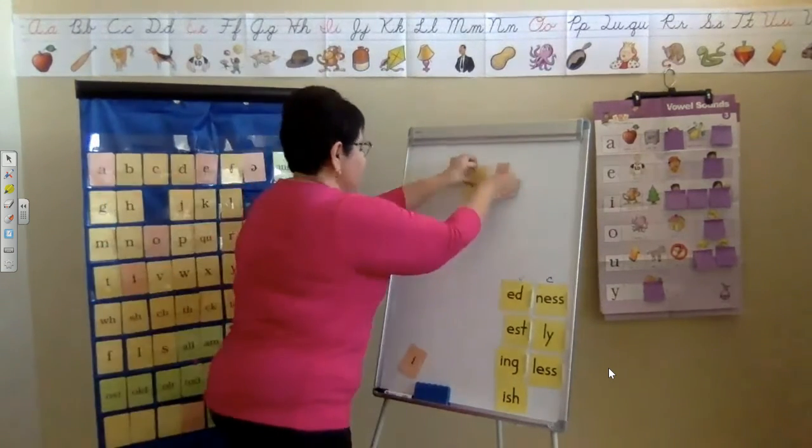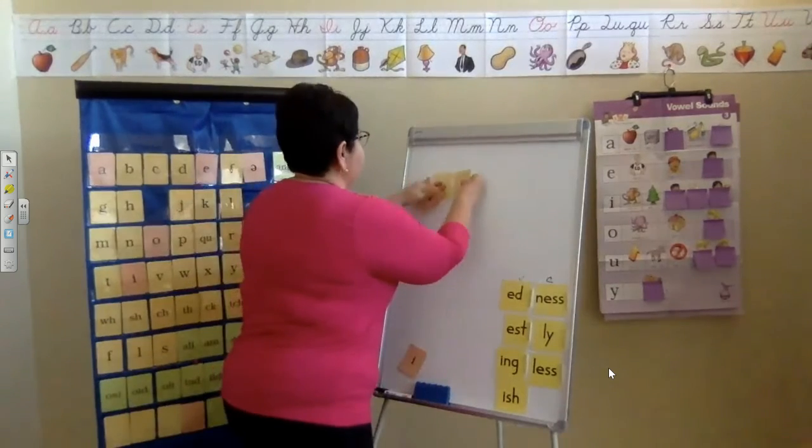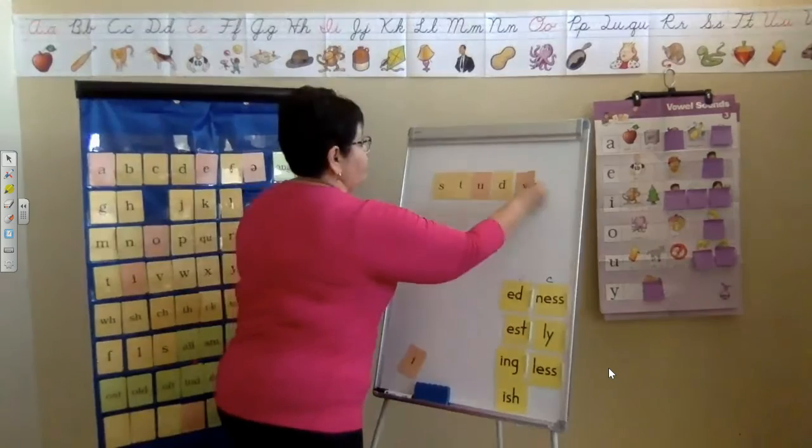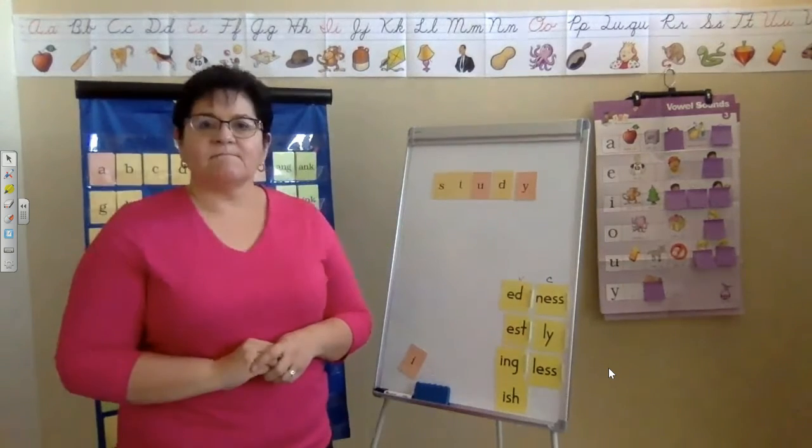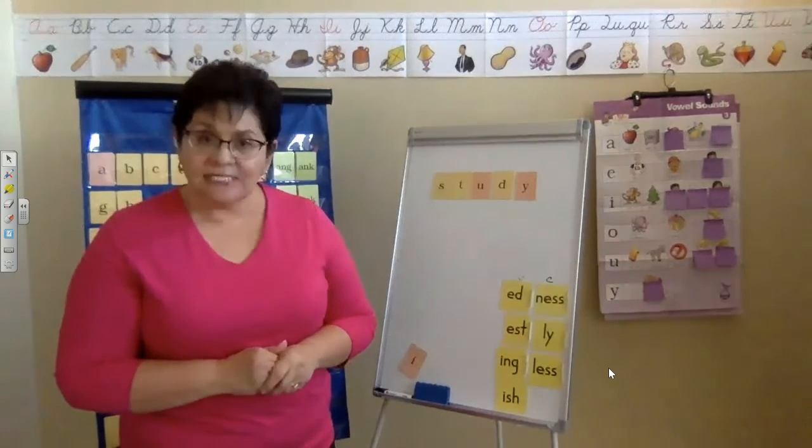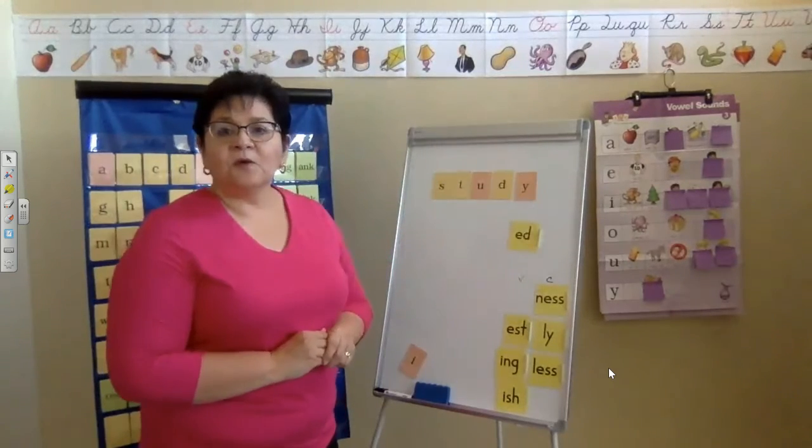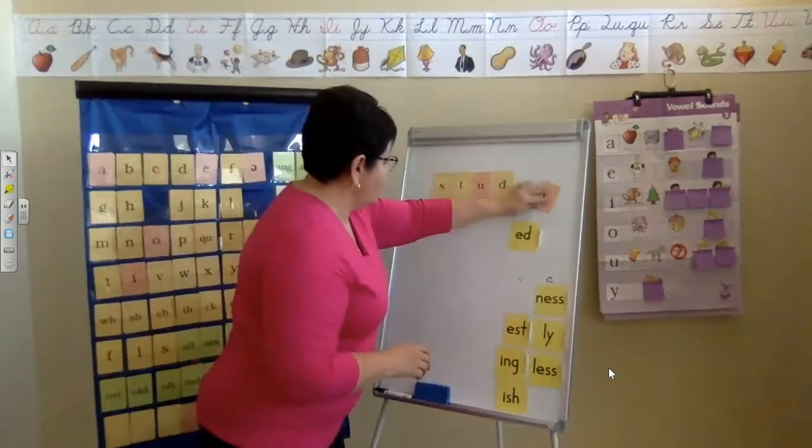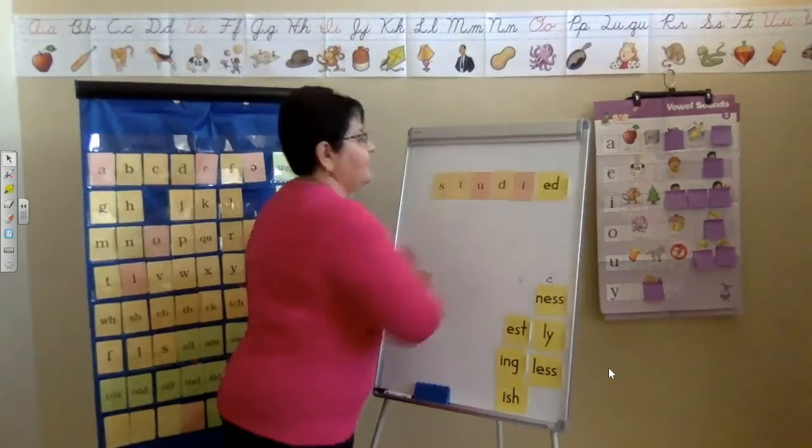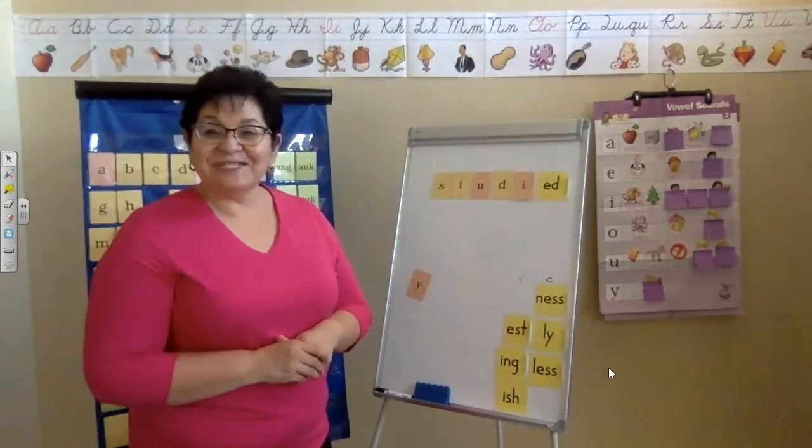All right. Let me build a couple more words for you. Read this word. So that word is study. But I want it to say studied. I want to add my suffix ED. What do I do? Change that Y to I and add ED. Now read it. Study, studied. You did that really well.